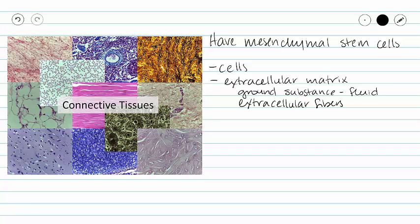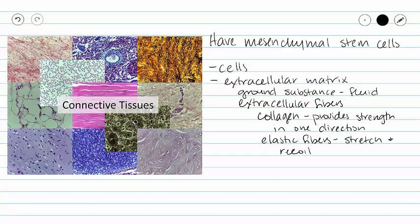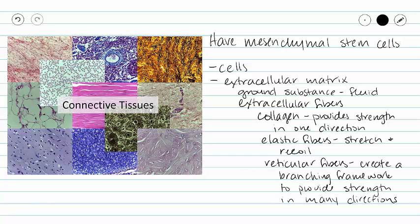We have three major fiber types. Collagen fibers are going to provide strength in one direction, whereas elastic fibers are going to provide stretch and recoil. And lastly we have reticular fibers, which create a branching framework to provide support and strength in many directions. So there are our unifying characteristics of connective tissues.